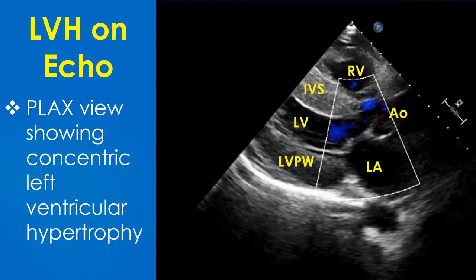Discussion on left ventricular hypertrophy on echocardiogram. Parasternal long axis view showing concentric left ventricular hypertrophy. Both the interventricular septum and left ventricular posterior wall are thickened significantly.